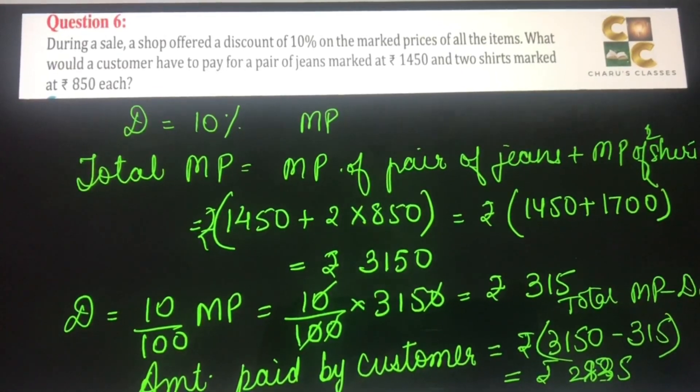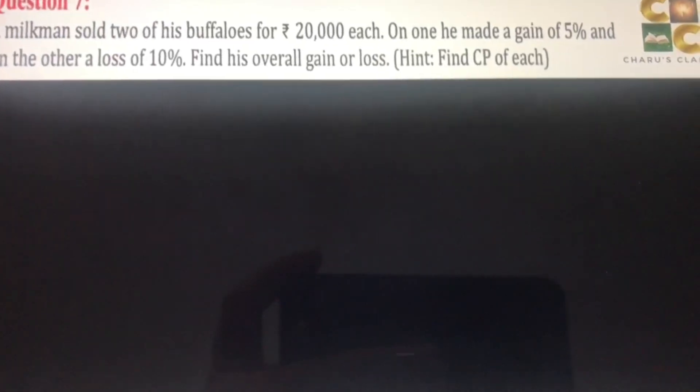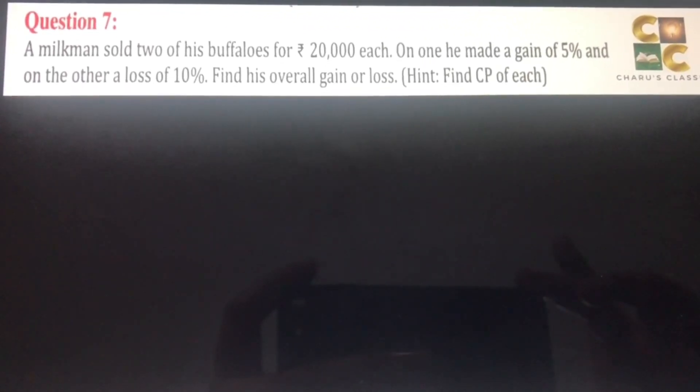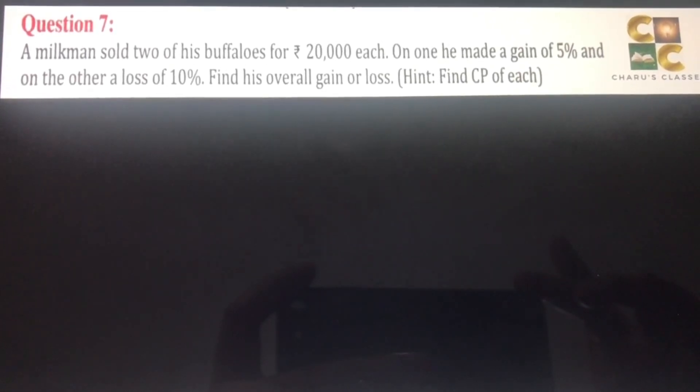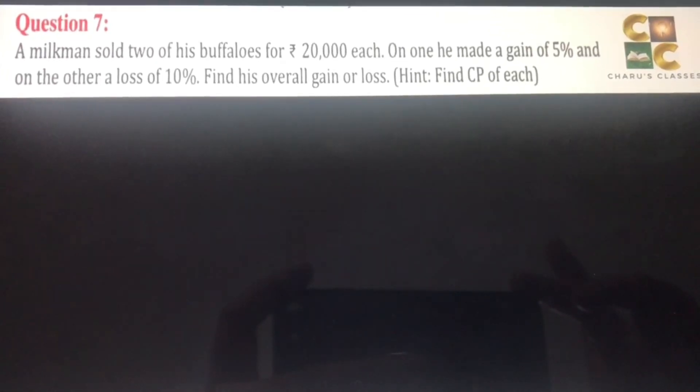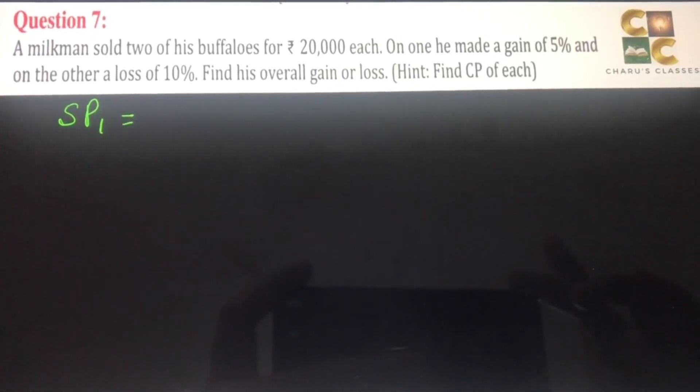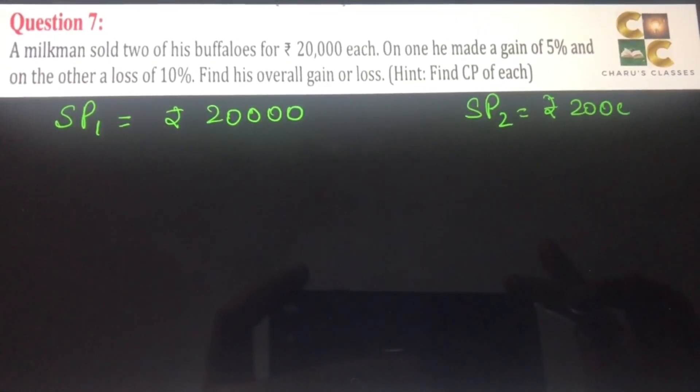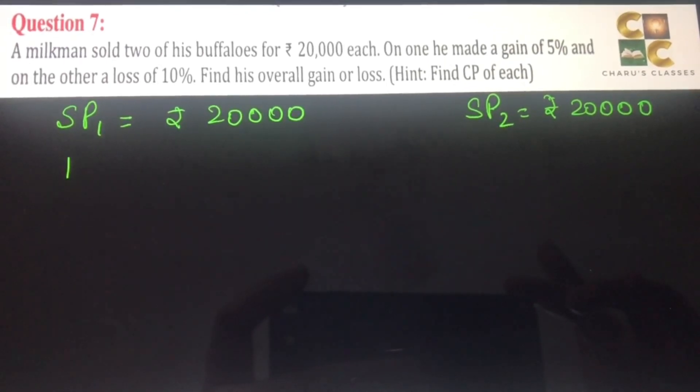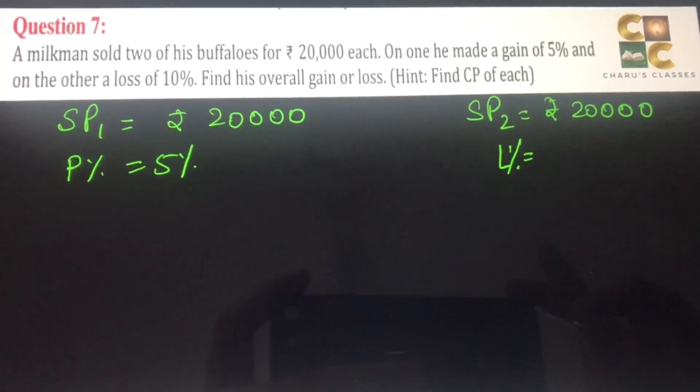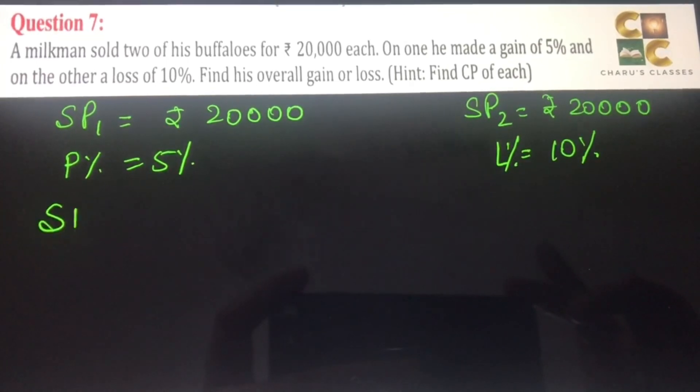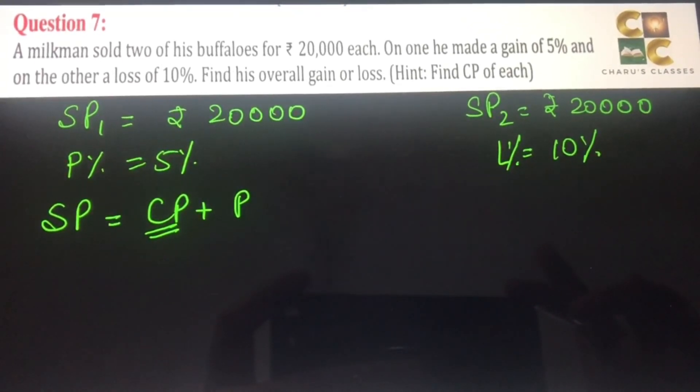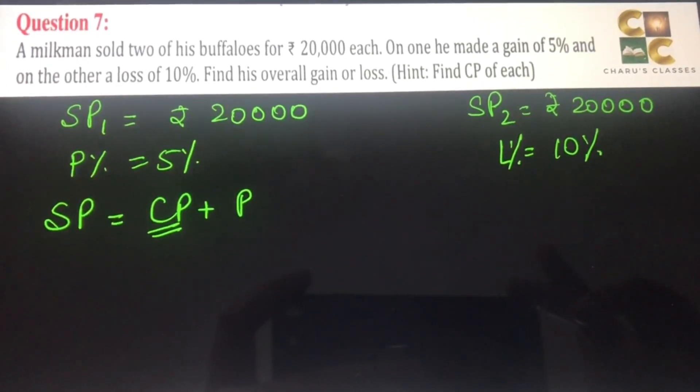Question number seven. A milkman sold two of his buffaloes for rupees 20,000 each. On one he made a gain of 5% and on the other a loss of 10%. Find his overall gain or loss. On the first buffalo, the profit percentage is 5%, and on the second buffalo, the loss percentage is 10%. When there is profit, then the selling price equals cost price plus profit. So let the CP be X for the first buffalo.